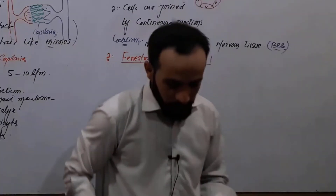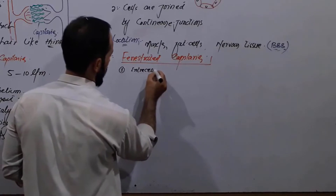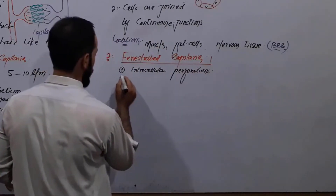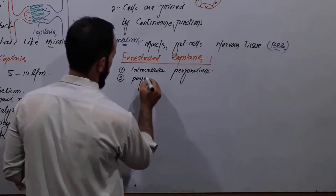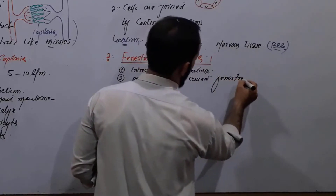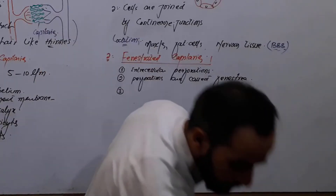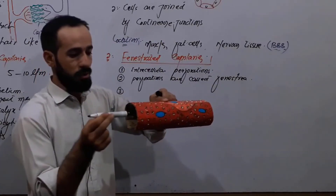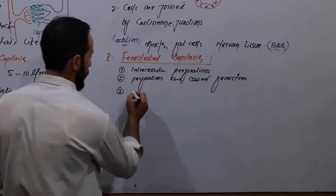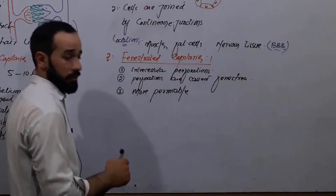Fenestrated capillaries have intracellular perforations. Those capillaries which have intracellular perforations are called fenestrated capillaries. These perforations are called fenestrae — that's why we call them fenestrated capillaries. Because they have more fenestrae, there is greater diffusion of substances through them, making them more permeable capillaries compared to continuous capillaries.